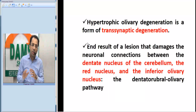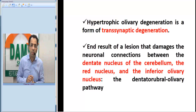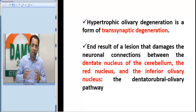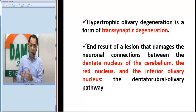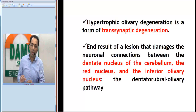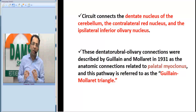This entire set of images represents hypertrophic olivary degeneration. It is a trans-synaptic degeneration resulting from a lesion — in this case, a hemorrhage — which damages the connections between the dentate nucleus, the red nucleus, and the inferior olivary nucleus. This entire pathway is also called the dentato-rubro-olivary pathway.